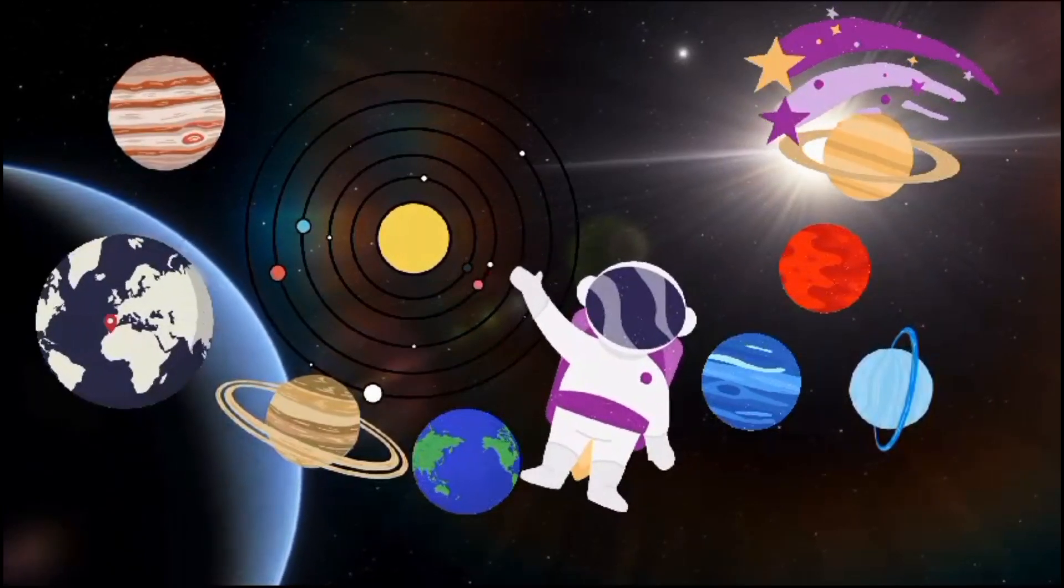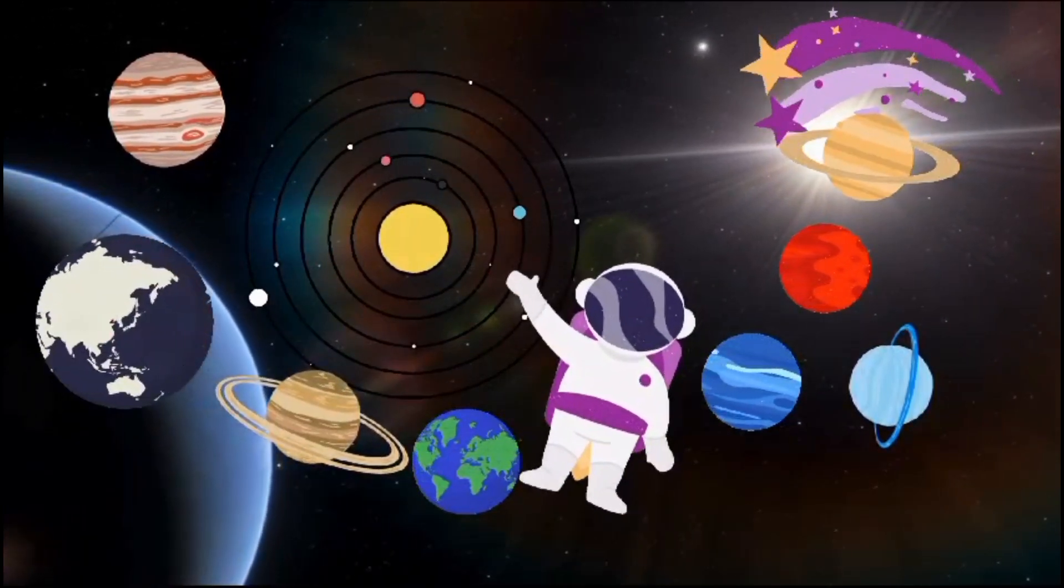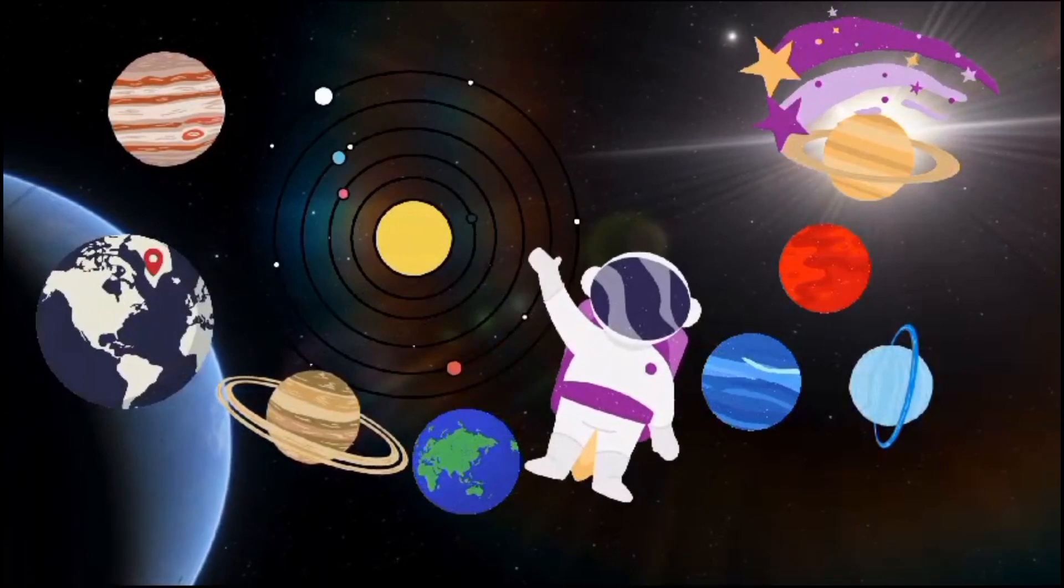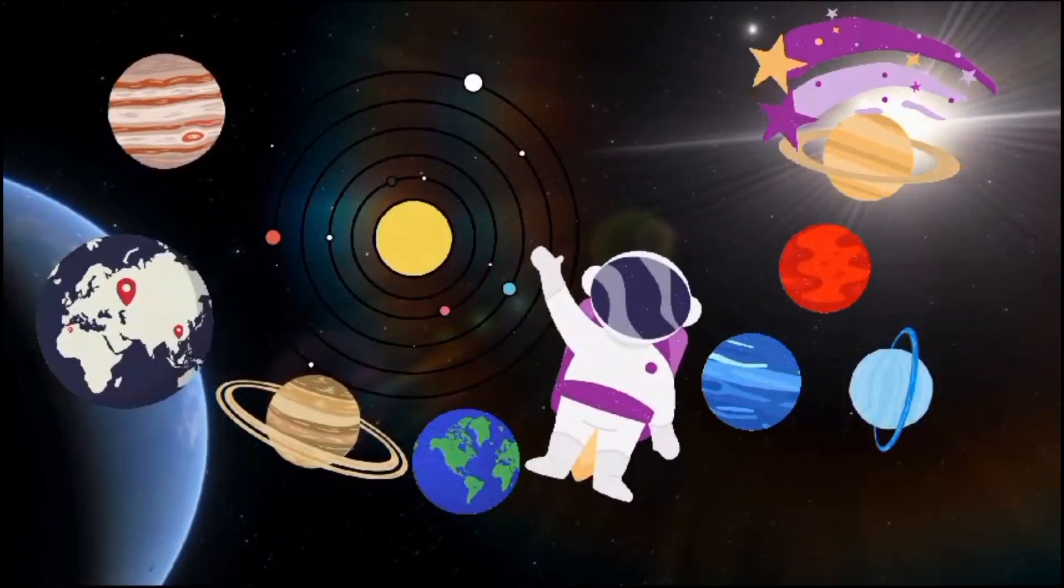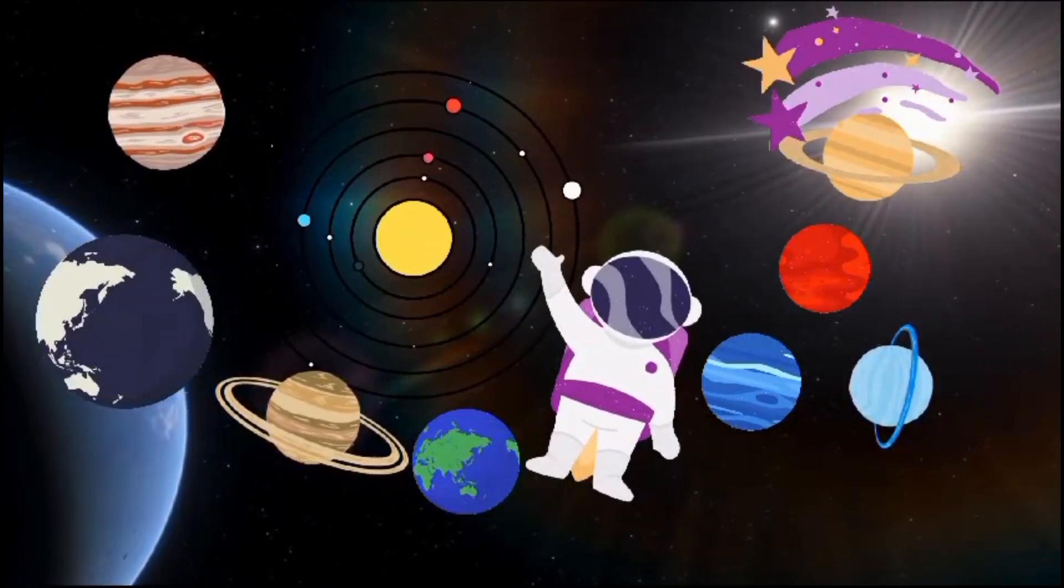There are eight planets in the solar system. We revolve around the Sun. Join us to learn about the different planets. Now sing along and have some fun.